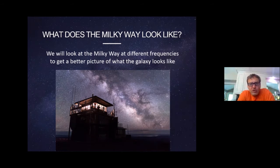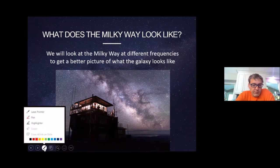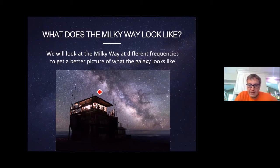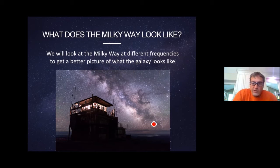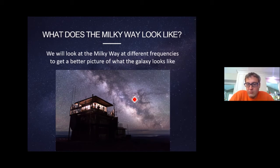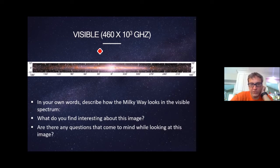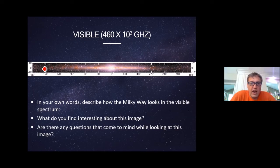The first question is: what does the Milky Way look like? When we look at the Milky Way, you can see there are parts where it is really bright and other parts that are not so bright. The brighter parts indicate you're looking at the center. This is the visible light image, and it's actually a 360-degree picture — an image taken of the entire Milky Way.